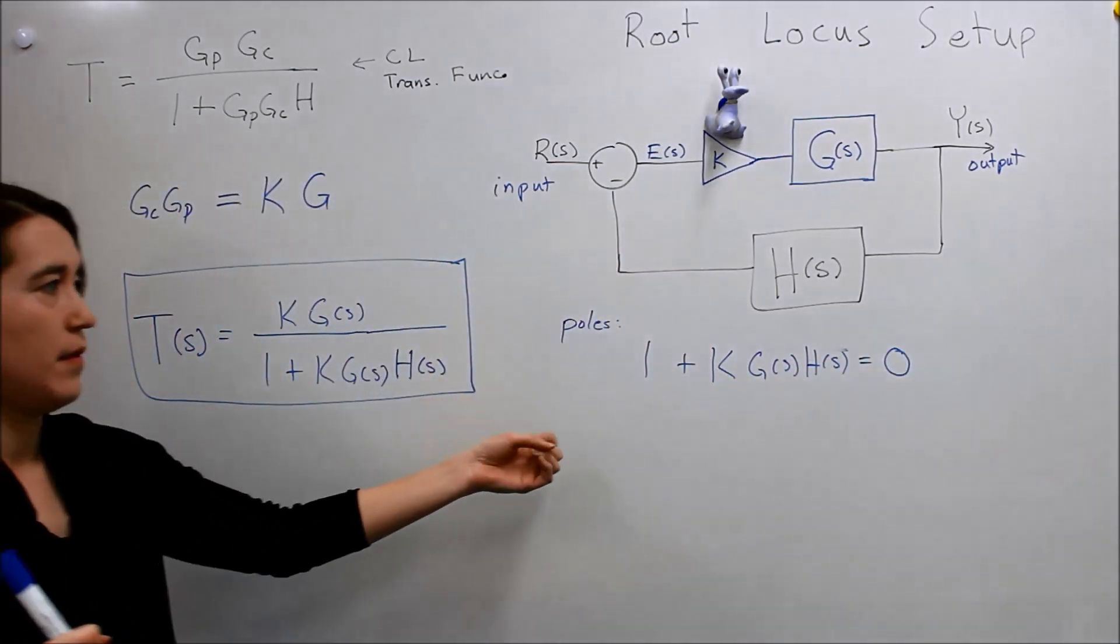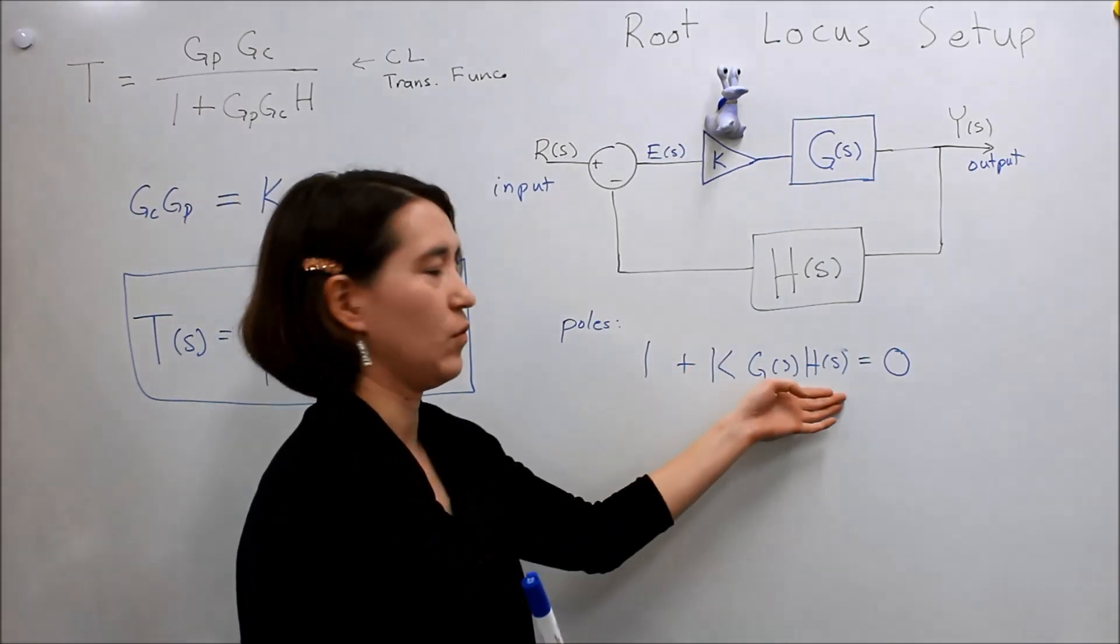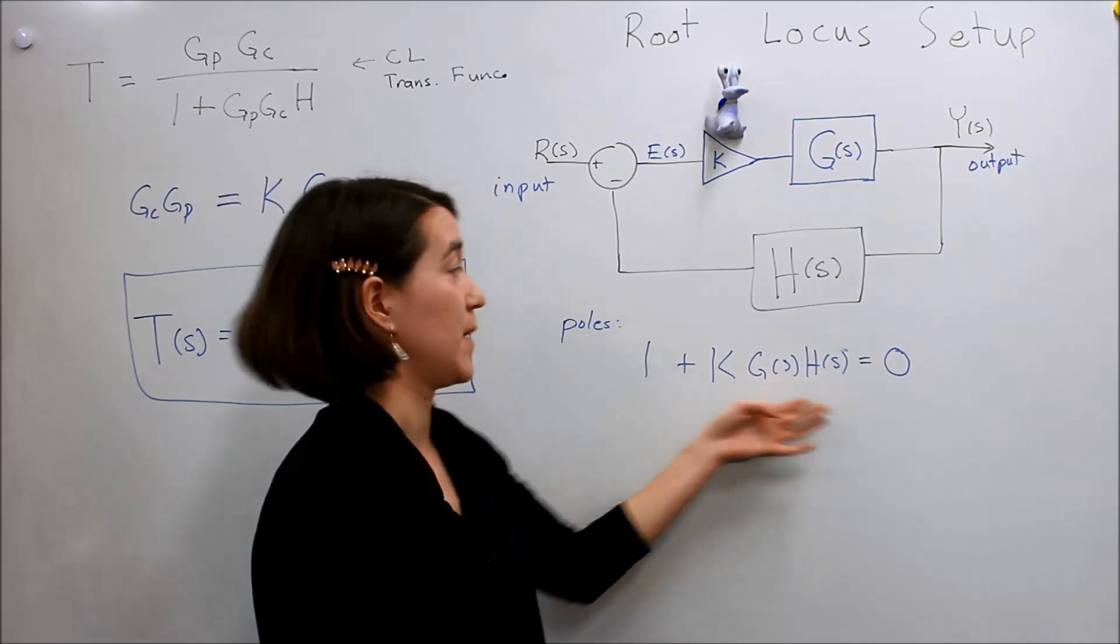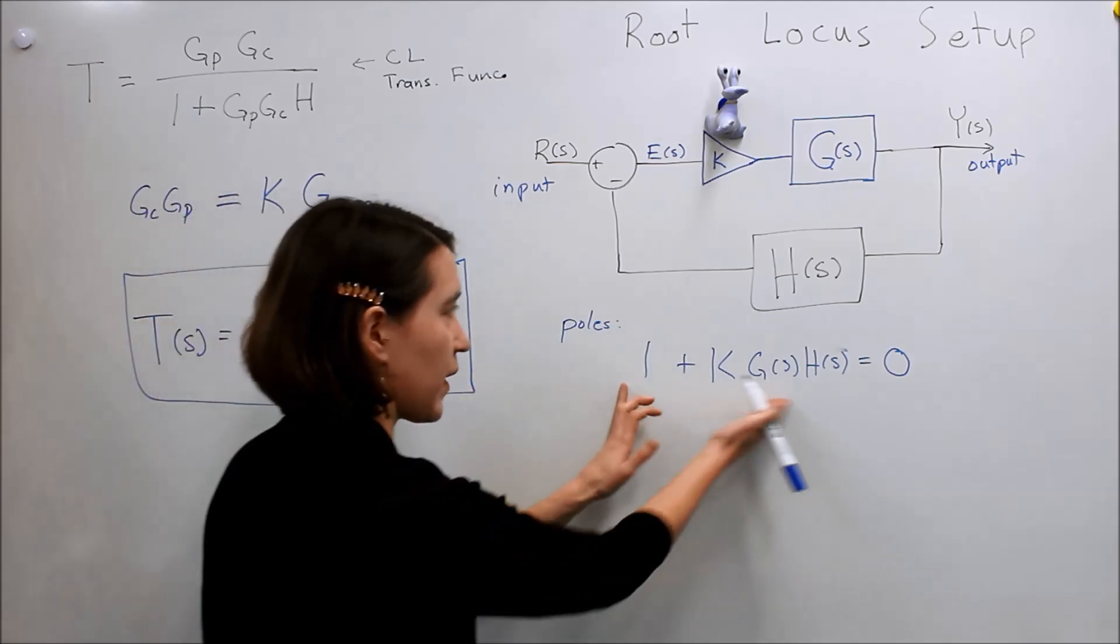Okay, and as we change K, we will observe that our expression will change, our poles will move around because it's a variable that's affecting their position. So, we can also rewrite this, though, if we want to kind of focus on this part.